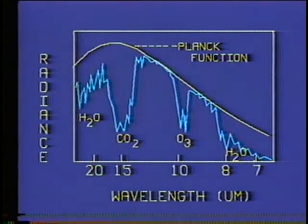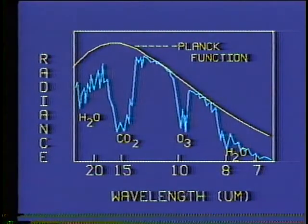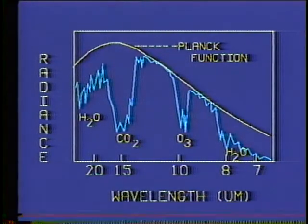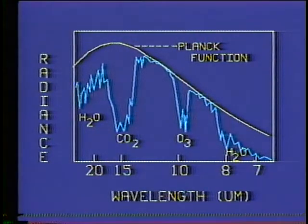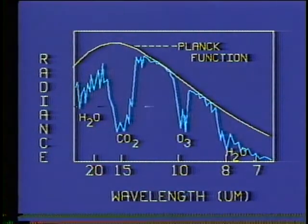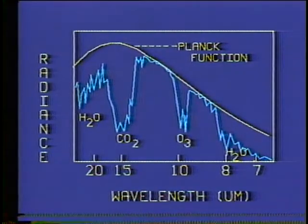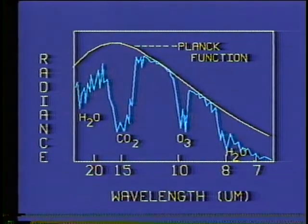The 9 to 11 micron window region is interrupted by an ozone absorption band. Carbon dioxide is a strong absorber in the 15 micron region, while water vapor absorbs radiation near 7 microns and near 16 microns.